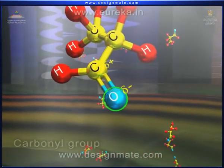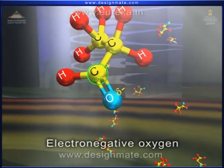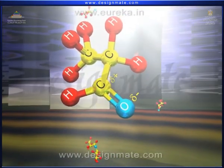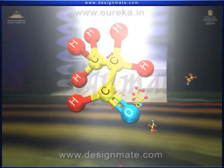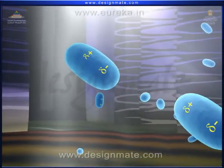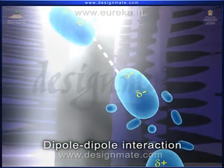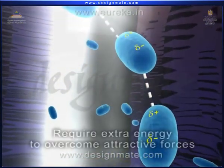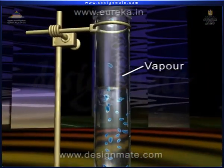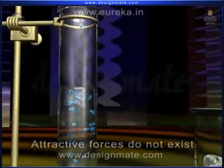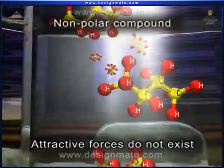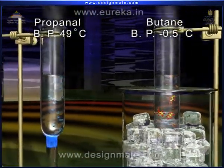The carbonyl group in propanal has an electronegative oxygen atom and a positively charged carbon atom. The opposite charges make propanal a polar compound and each molecule behaves as a dipole. When two such molecules come in contact with one another, dipole-dipole interaction results. Propanal molecules thus require extra energy to overcome these attractive forces and get converted to vapor form. Such attractive forces do not exist in butane because it is a non-polar compound. Hence, the boiling point of propanal is higher than butane.